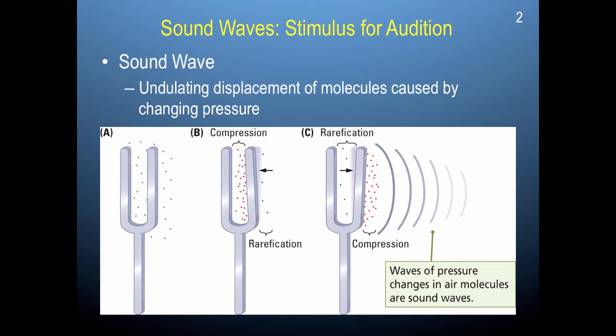A sound wave is the undulating displacement of molecules caused by changing pressure. So a sound wave is basically a wave of pressure that changes air molecules and changes the way they are distributed. This change in pressure and redistribution of air molecules can be sensed by receptors in your ears.